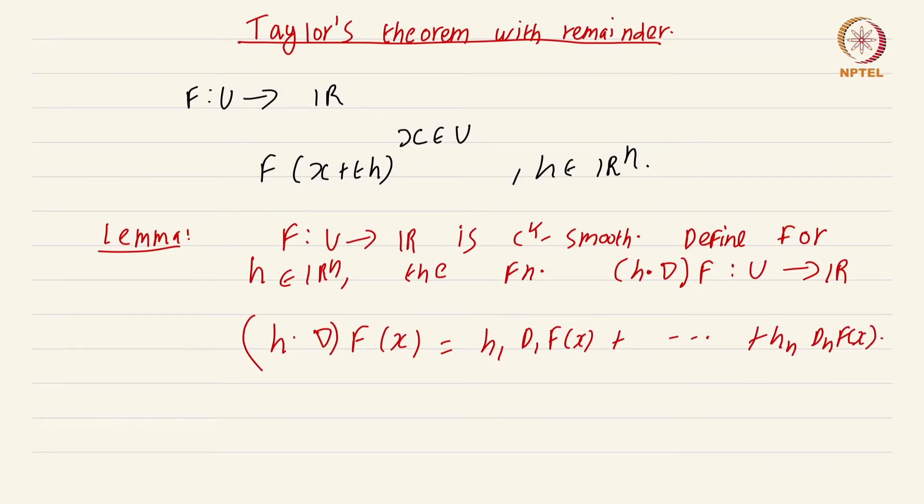If you carefully observe what we have done is we have treated this dot as the standard dot product. The expression on the right hand side is exactly what you would get if you blindly just take the dot product between the vector h and the operator nabla treated as a vector. This is sort of like a formal definition.